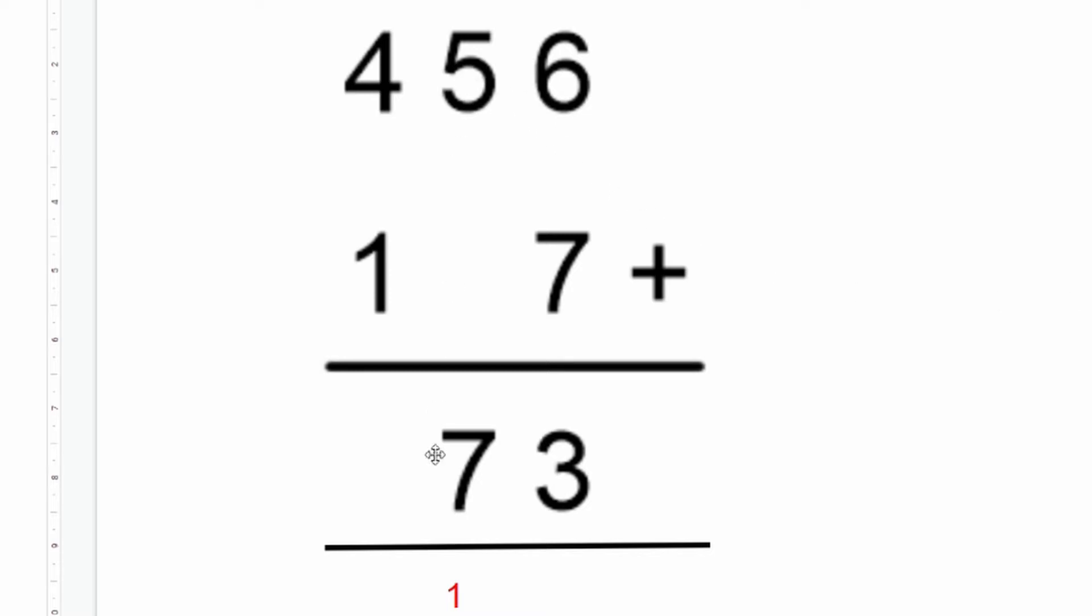We need to add another one just here so that our number reads correctly. So five add one is six, add another one is seven.